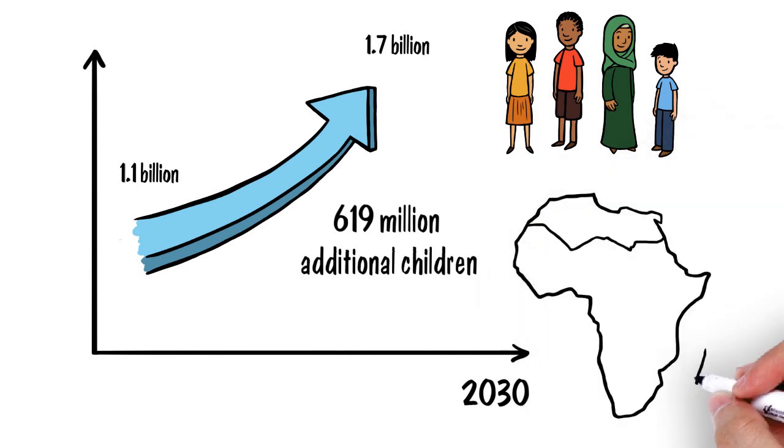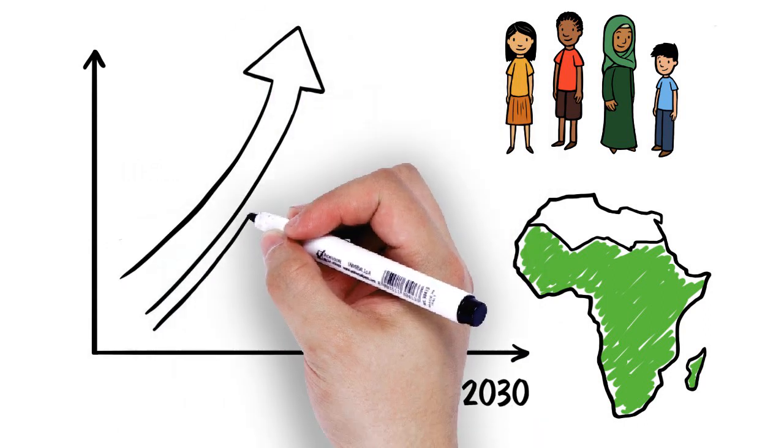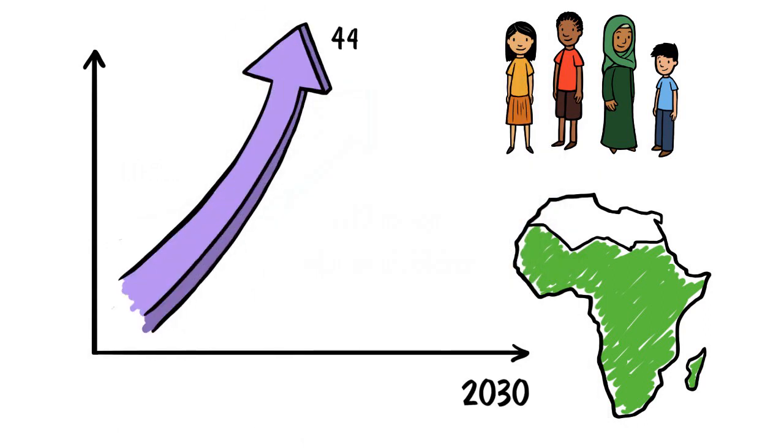In sub-Saharan Africa, the situation is especially challenging. By 2030, 444 million children will need to be in school.